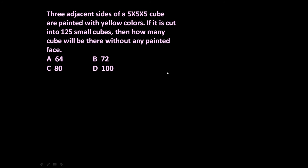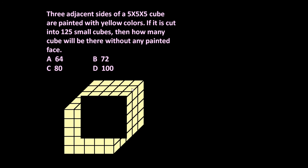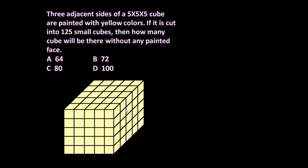First let us draw a cube. Total 6 faces are there: front, back, top, bottom, right, left. 3 sides are painted with yellow color — 3 adjacent sides. So front is yellow, top is yellow, right is yellow. Back side is white, bottom is white, and left side is also white, because only 3 sides are painted.